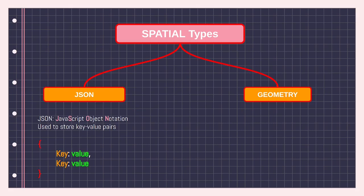JSON stands for JavaScript Object Notation — J for JavaScript, S for Script, O for Object, N for Notation. It's used to store key-value pairs: a key colon value, comma, key colon value. If you've been following my channel for a while, we probably use JSON a lot because I do a lot of back-end stuff.